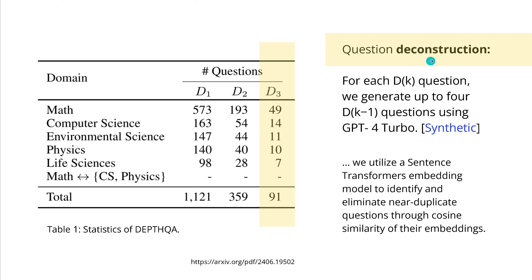They had complete solutions as presented in the mathematical textbooks already. For the deconstruction phase, for each D3 question they generate up to 4 D2 questions using GPT-4 Turbo. They used not human intelligence but synthetic intelligence — the best available AI system at the time. They generated synthetic reasoning data, which might not be perfect, but they had ground truth from the textbooks. They also utilized a sentence transformer (SBERT) embedding model to identify and eliminate near-duplicate questions based on cosine similarity of their embeddings.